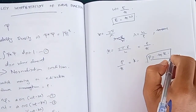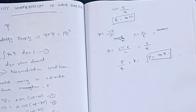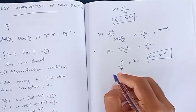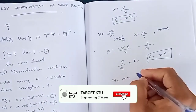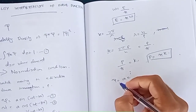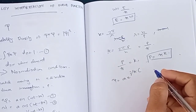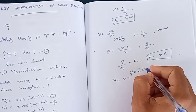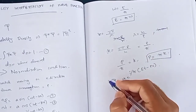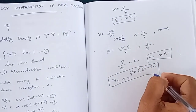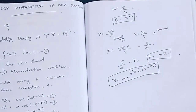Here is the wave function for a particle with energy E and momentum p. ψ = A e^(i/ħ)(Et − px). This is the probability interpretation of the wave function.